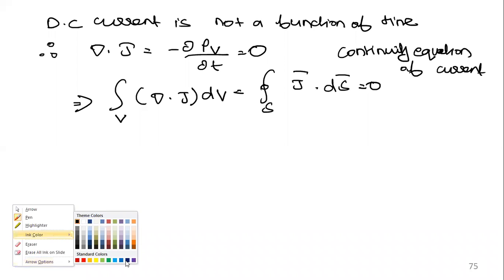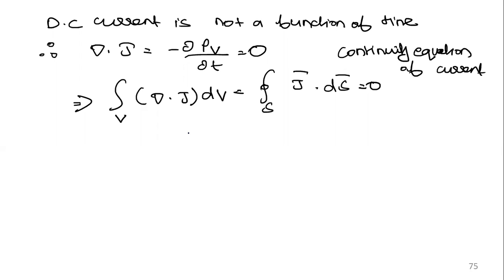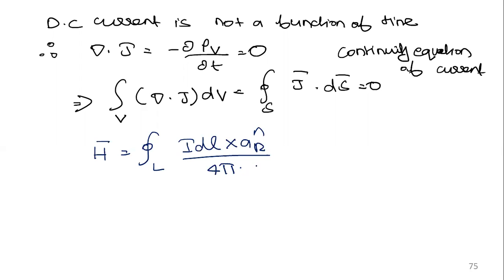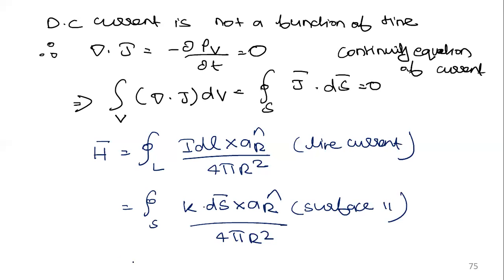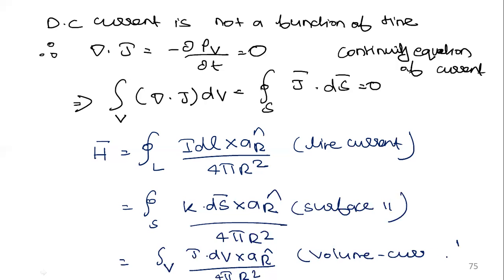We can now conclude with three equations for magnetic field intensity H. For line current: H = ∫_L I dL × aR / (4π R²). For surface current: H = ∫_S K · dS × aR / (4π R²). For volume current: H = ∫_V J · dV × aR / (4π R²). The differential current element I dL for line charge corresponds to K · dS for surface charge and J · dV for volume charge.